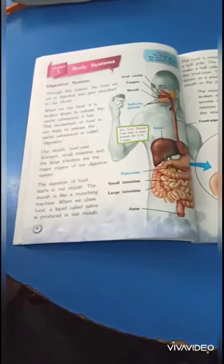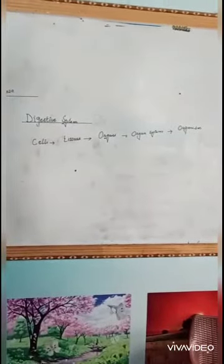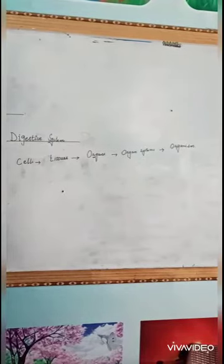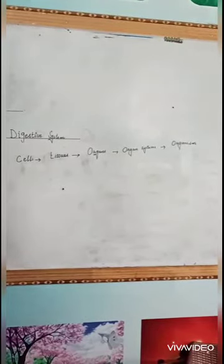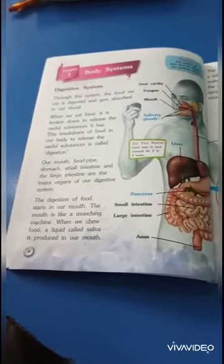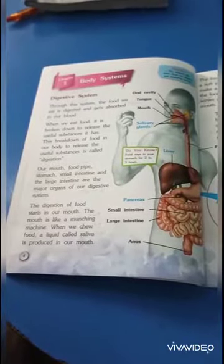To know about body systems, we have to know the different terms. Cells are the basic unit of life. Cells combine to form tissues. Different tissues combine to form organs. Organs work together to form an organ system, and then organ systems make an organism.